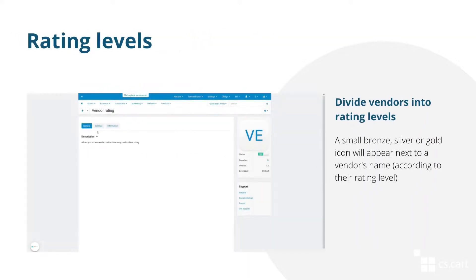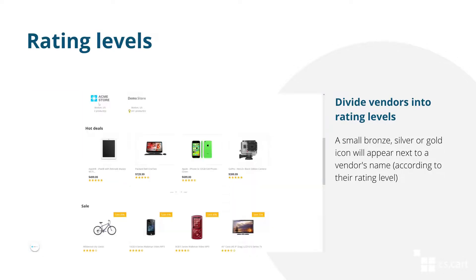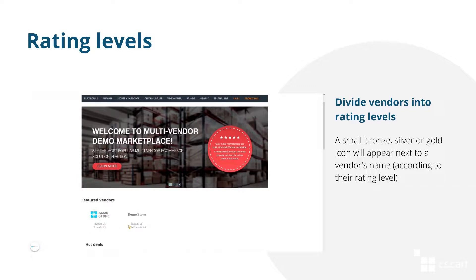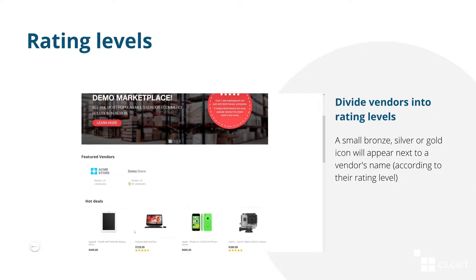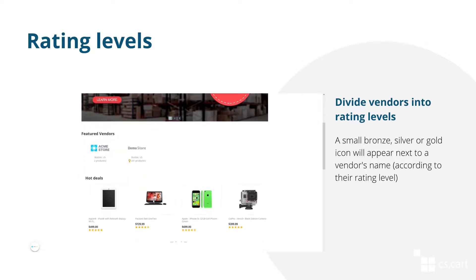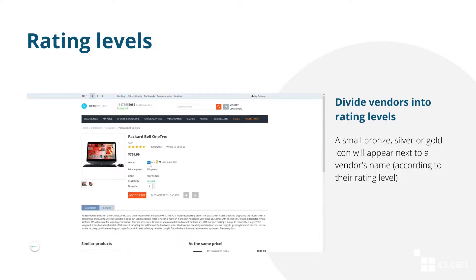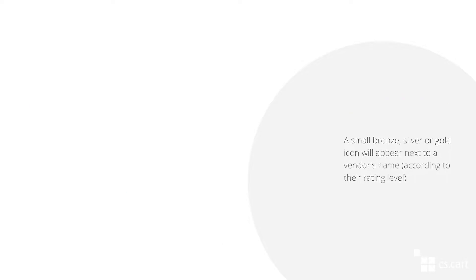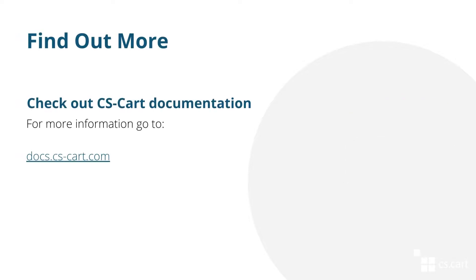Divide your vendors into rating levels. There are three levels of rating: bronze, silver, and gold. Define the lower limit for each of these levels. If a vendor reaches a rating level, a bronze, silver, or gold icon appears next to the vendor's name.